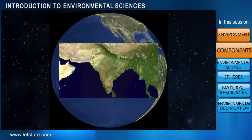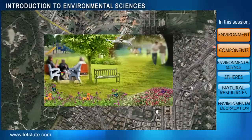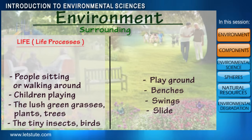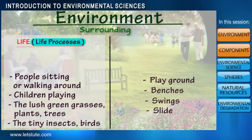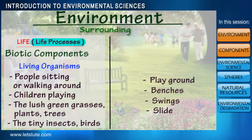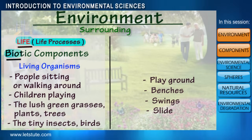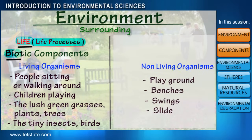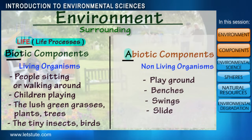If we observe the things to our left, they all have something in common — they have life in them, or they perform various life processes like eating, breeding, and reproduction. So we call them all living organisms, which are also called biotic components, because the word 'bios' means life. The things to our right do not have life in them, so we call them non-living organisms or abiotic components, because 'abiotic' means no life.